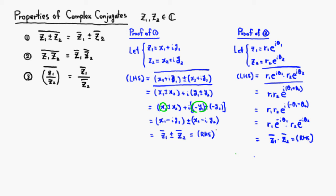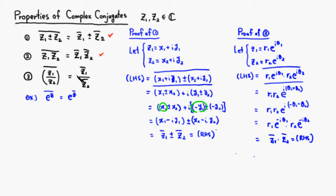So we've proved properties one and two. Property three is homework, but it can be done very similarly to the proof of property two. Now let's go over one more example: the exponential function. How would you compute the conjugate of e^z? It turns out this is just e^(z-bar) — you only conjugate the exponent.